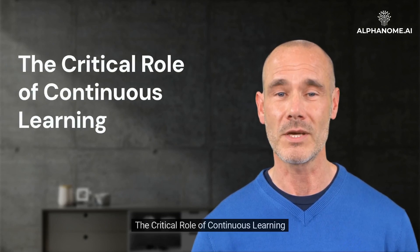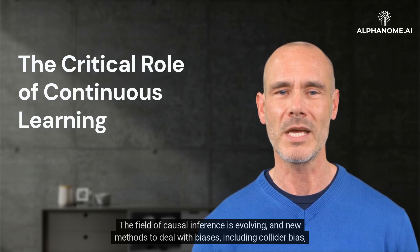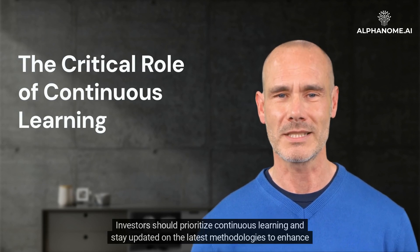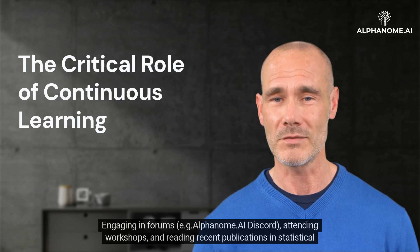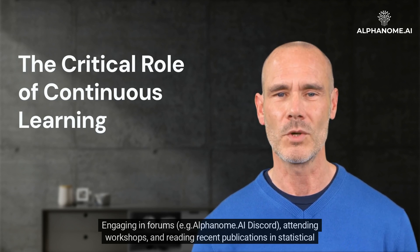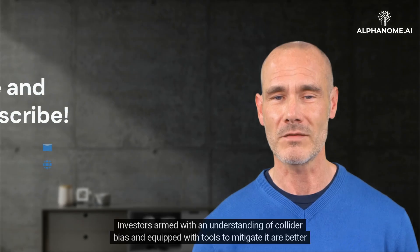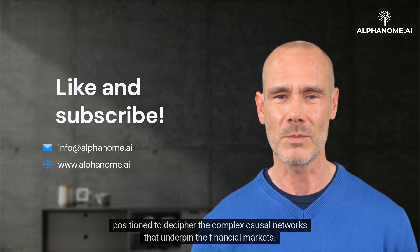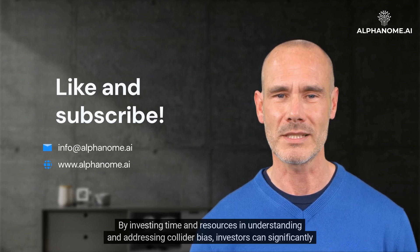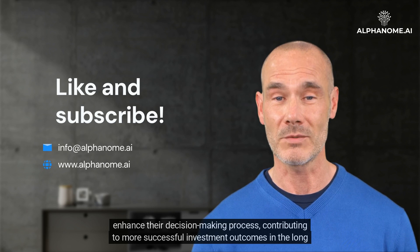The field of causal inference is evolving, and new methods to deal with biases, including collider bias, are continually being developed. Investors should prioritize continuous learning and stay updated on the latest methodologies. Engaging in forums such as Alphanome AI Discord, attending workshops, and reading recent publications in statistical and investment journals can be valuable for staying ahead of the curve. Investors armed with an understanding of collider bias and equipped with tools to mitigate it are better positioned to decipher the complex causal networks underpinning financial markets, contributing to more successful investment outcomes in the long run.